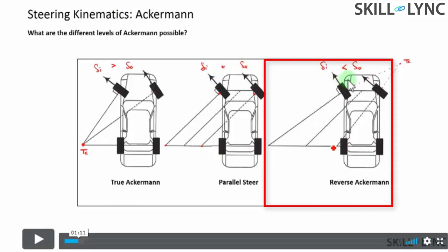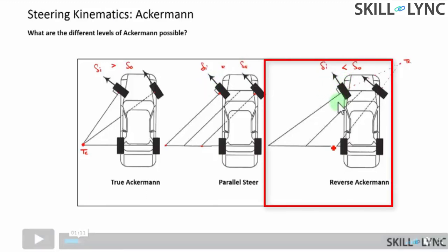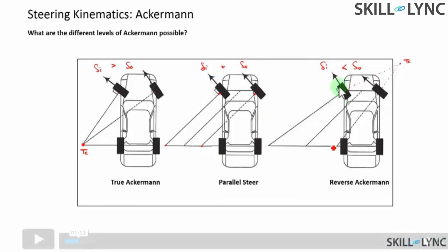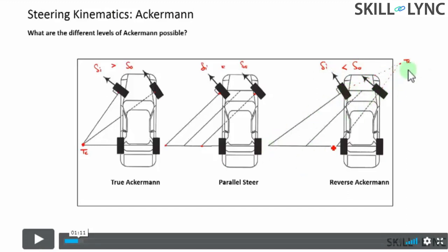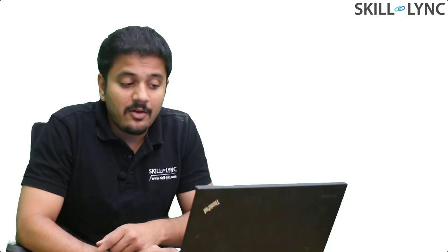The final possible configuration is what you call as reverse Ackermann, and the idea is very simple. In this case, the angle made by the inner tires is much lesser than the angle made by the outer tires. If you basically draw the perpendiculars, they do not intersect on this side, whereas if you go on the other side, these lines do intersect and your turn center is right there.